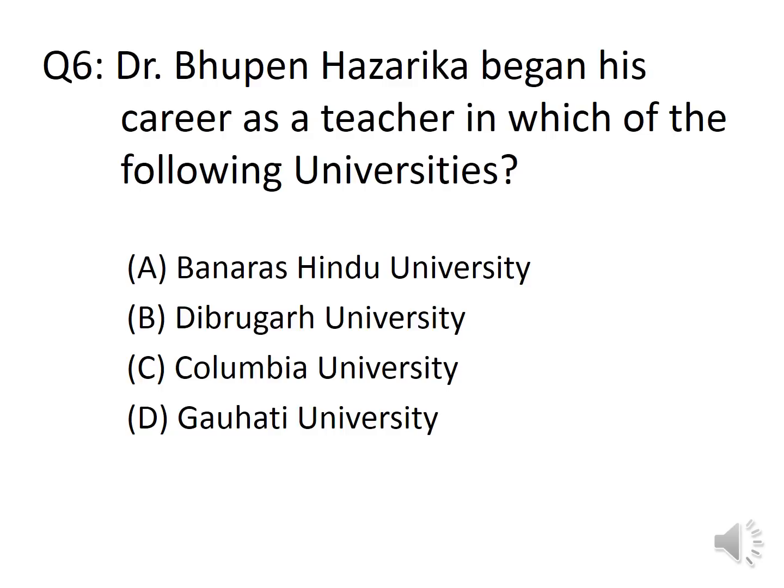Question 6: Dr. Bhupen Hazarika began his career as a teacher in which of the following universities? Options: A. Banaras Hindu University, B. Dibrugarh University, C. Columbia University, D. Guwahati University. The correct answer is Option D, Guwahati University. In Banaras Hindu University he completed his Masters, and from Columbia University he completed his PhD.